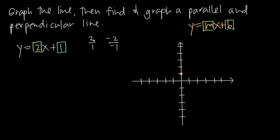Remember that slope is change in y over change in x. When we say positive 2 over positive 1, we mean go in the positive direction of the y-axis 2 units, and in the positive direction of the x-axis 1 unit — up 2 and over 1. We can also use negative 2 over negative 1, which means go down 2 along the y-axis and over 1 to the left. You can see our line forming — this is the line y equals 2x plus 1.